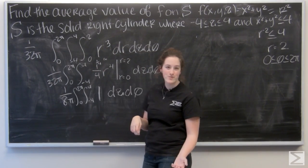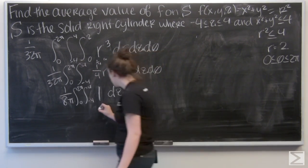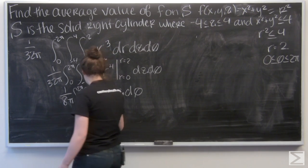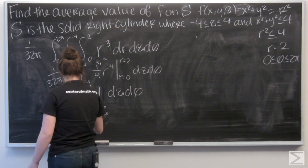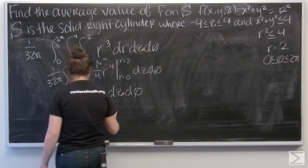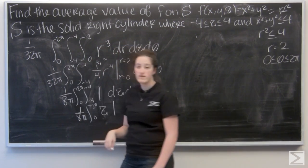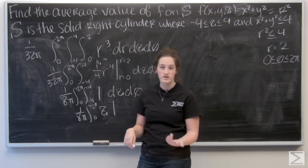So now the integral of 1 with respect to z is just going to be z. And I want to evaluate that from z equals negative 4 to z equals 4.